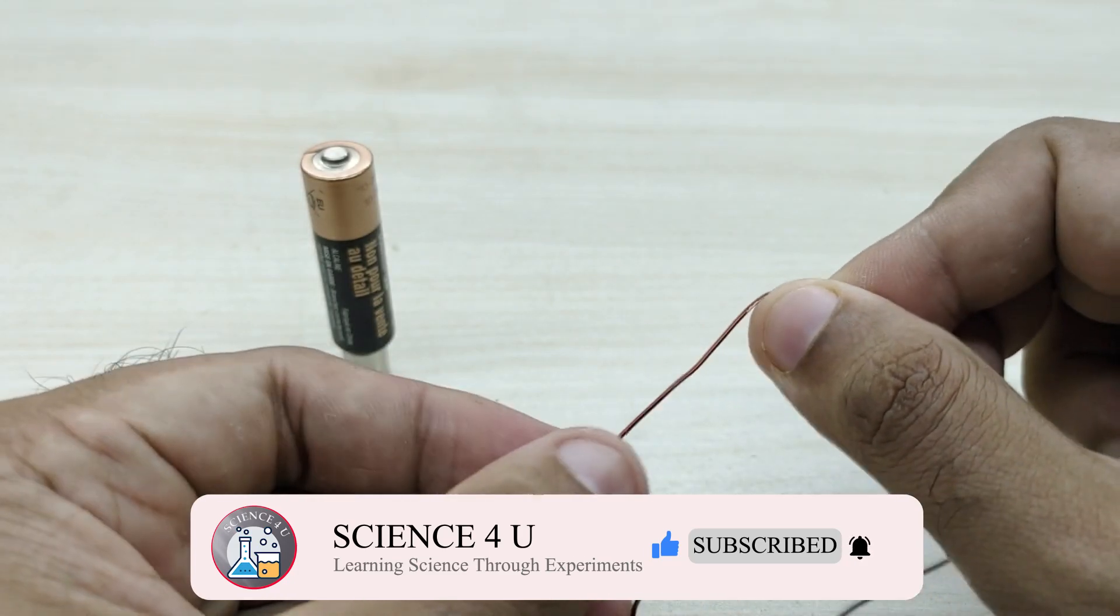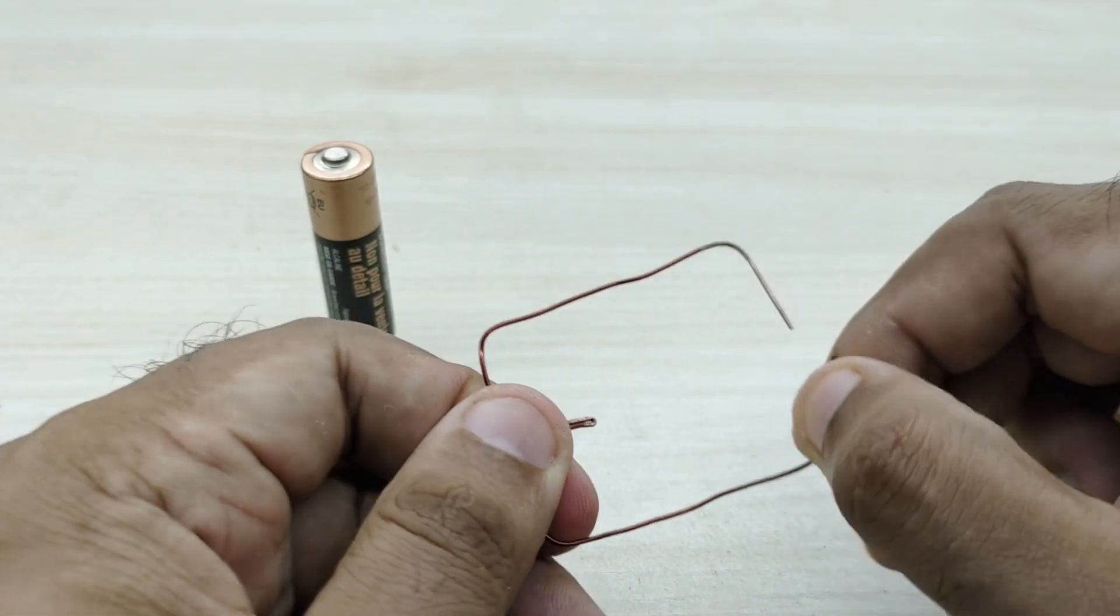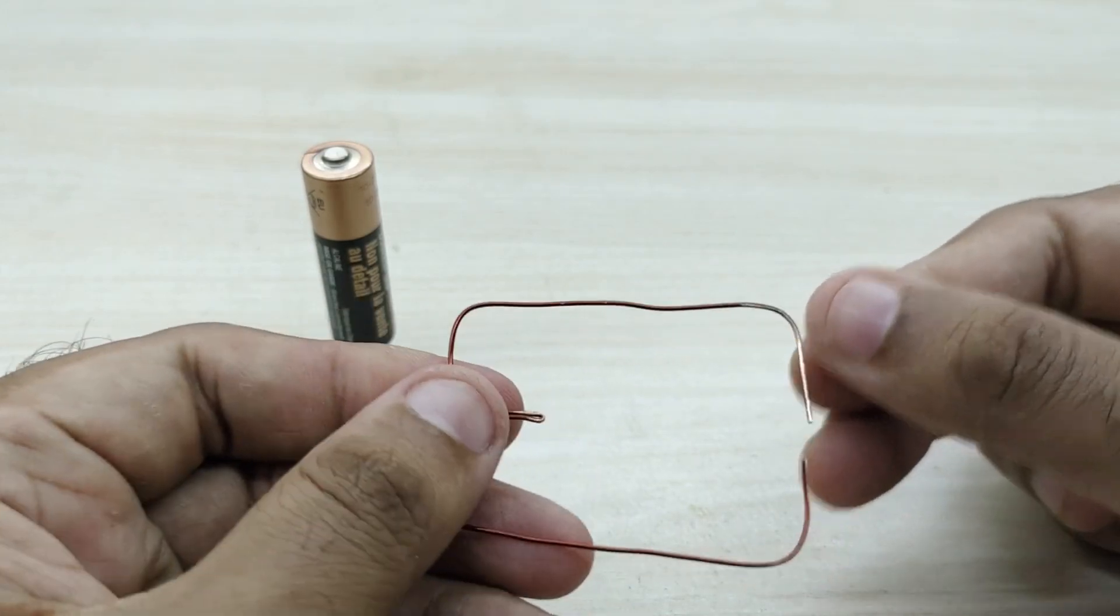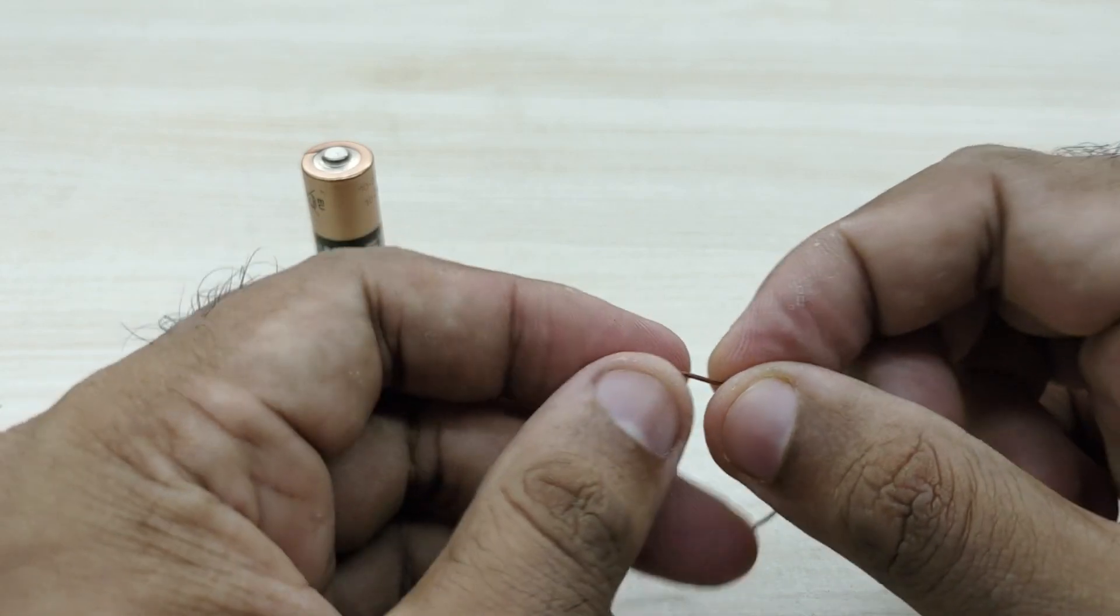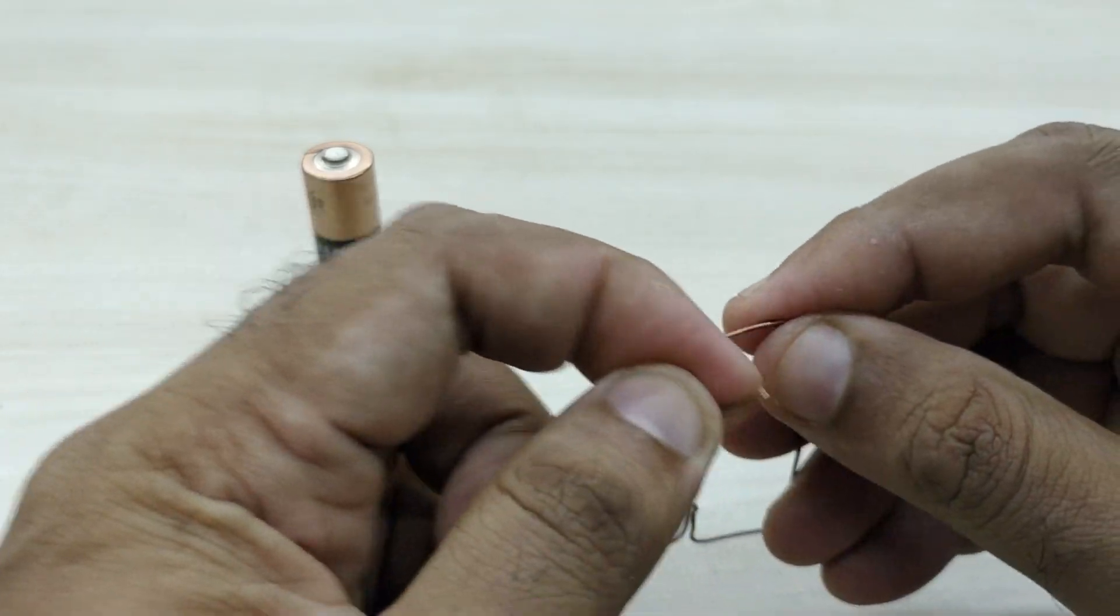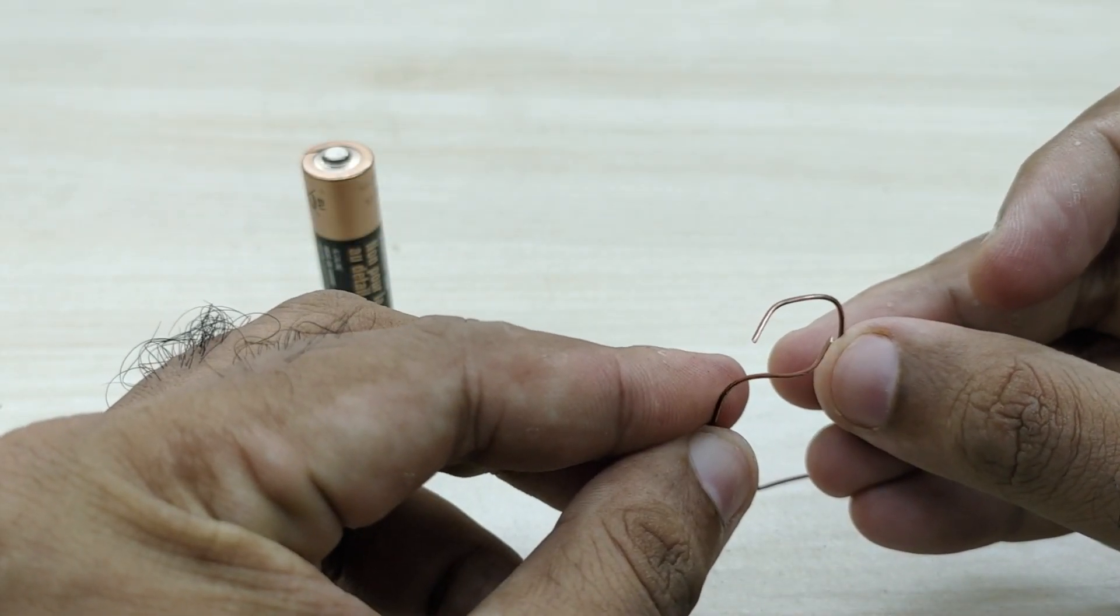Now leave the length of the double A battery and again bend inwards 90 degrees on both sides as shown. Finally make small bends on both ends of the copper wire so that it holds to the battery during rotation and doesn't fall off.